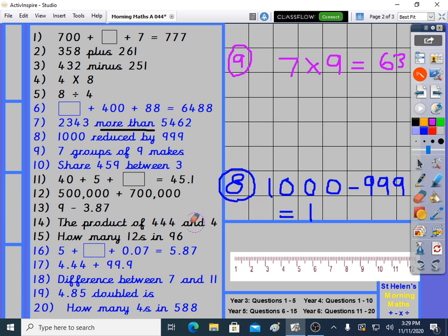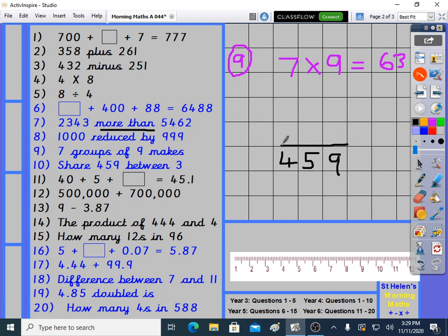We're already on question 10, which is division. Share 459 between three. Do you remember how to see if things divided by three? You add up the digits and see if it's in the three times table. This is because 4 and 5 is 9, and another 9 makes 18, and 18 is in the threes. How many threes in 4? One, remainder one. How many threes in 15? Counted on my fingers, it was 5. How many threes in 9? Counted on my fingers, it was 3. That was question 10.